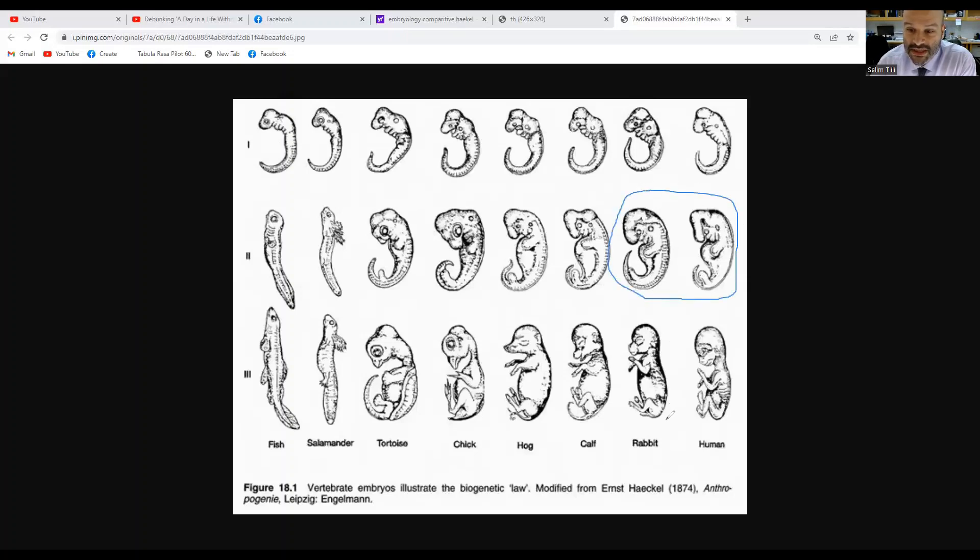Which would suggest that the rabbit and the human are more closely related than the human and the chick, while there are similarities in the embryological development at this second stage. Likewise we can see greater similarity to these two, which would suggest that the fish and the salamander are more closely related than the fish and the chicken.